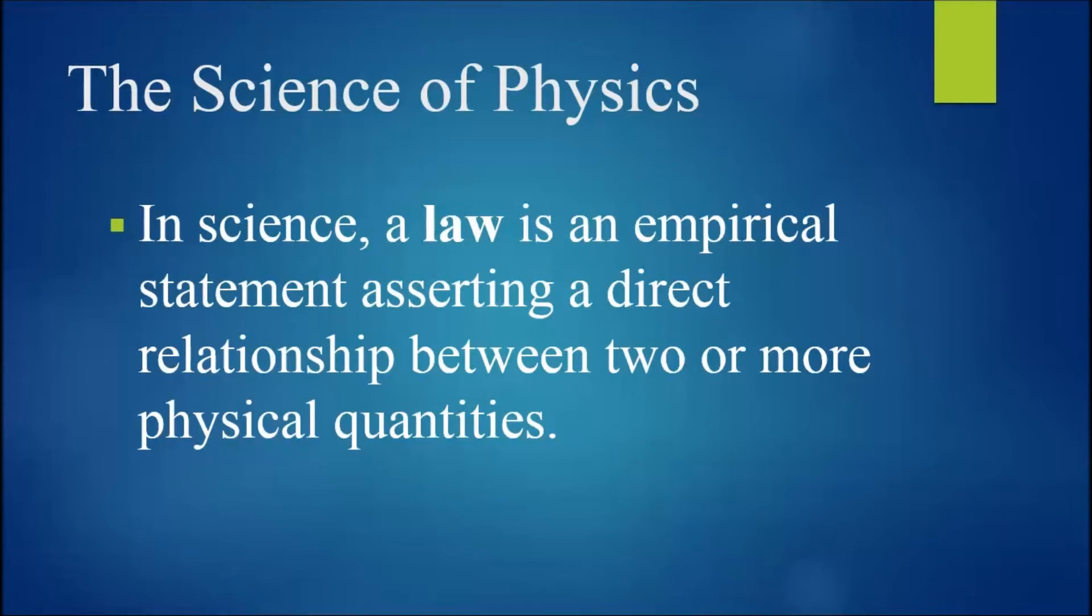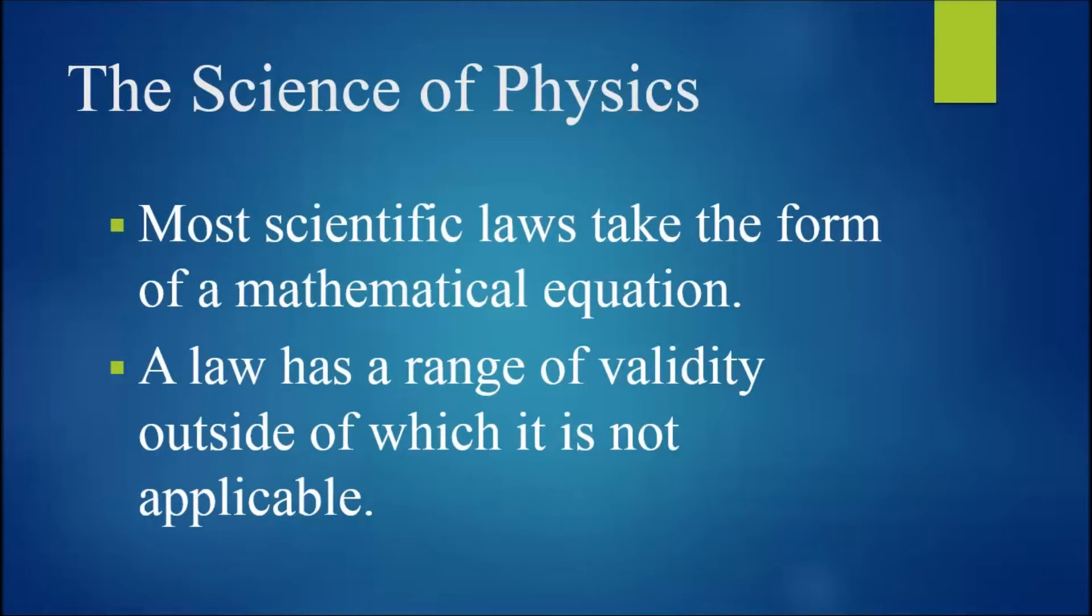Now, in science, a law is an empirical statement, that is, derived from experimentation, asserting a direct relationship between two or more physical quantities. Most scientific laws take the form of a mathematical equation, and a law has a range of validity outside of which it is not applicable.